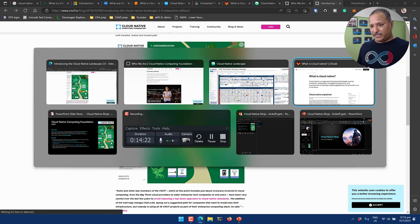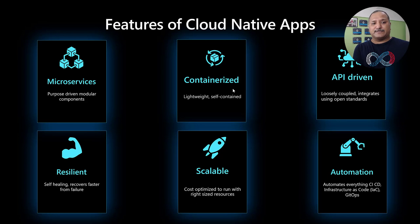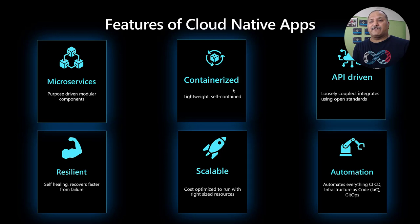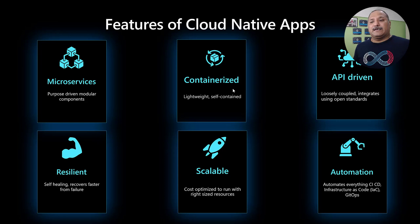So let's get back to the slides and see what are the key features of cloud native applications. As I was going through those different links, we saw that every organization has their own view about cloud native applications. If I were to summarize the key features, I would start with microservices. Most cloud native applications are built as microservices compared to the old ways where we had monolithic applications containing thousands of lines of code which were very difficult to maintain, difficult to deploy, and difficult to scale. Modern day applications are built as purpose-driven modular microservices, making it easier for us to manage, deploy, and scale them based on different needs.